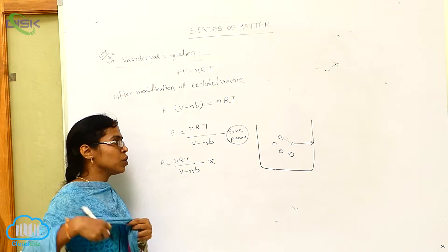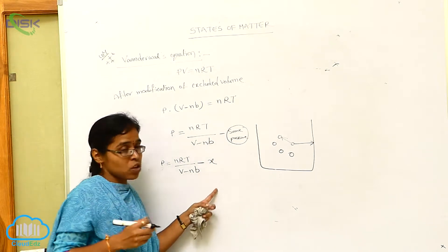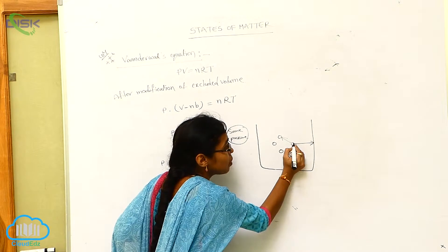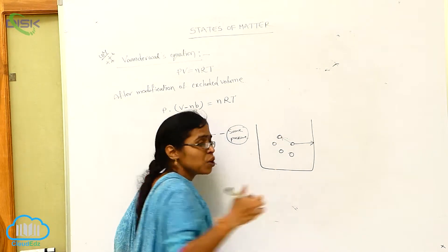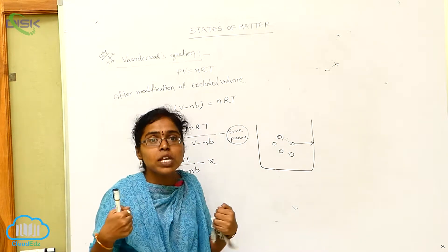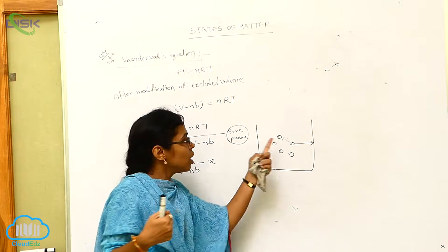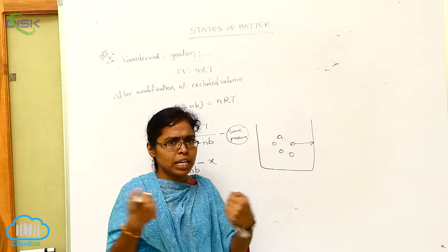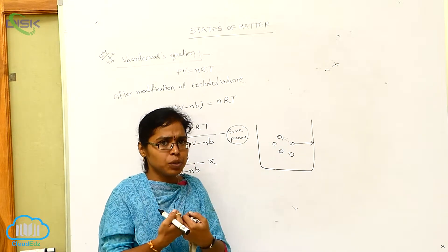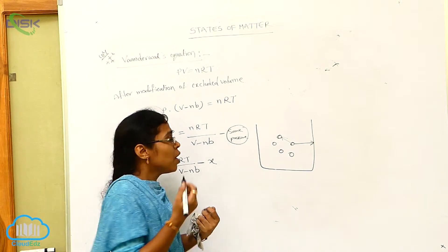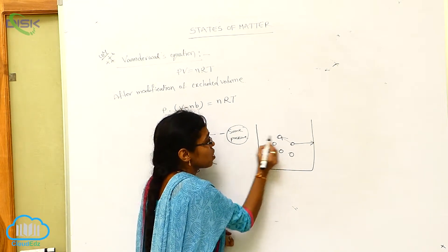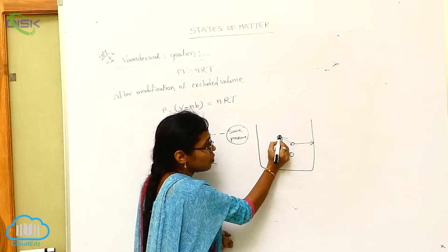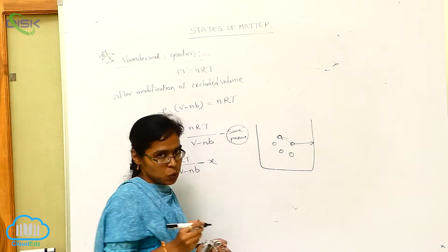That reducing pressure always depends upon those molecules which are involved in collisions with each other. For example, taking two molecules — collision always takes place between two molecules only. So that extra pressure, that X value, always depends upon these two molecules.